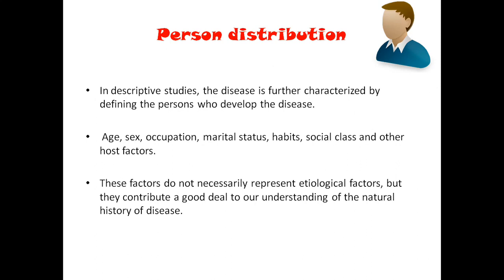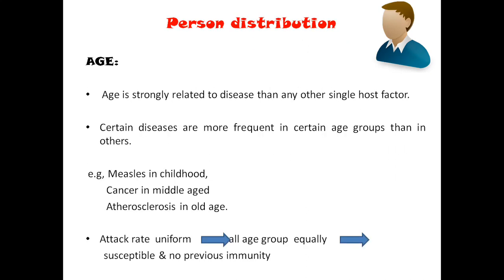We can easily understand in which age group, in which gender, and in which social class the disease is distributed. For example, measles happens in childhood, cancer in middle age, and atherosclerosis in old age. These are a few diseases which are very prevalent in certain age groups.